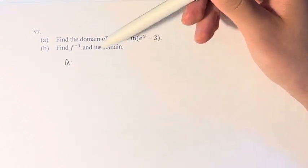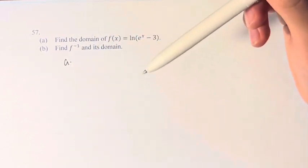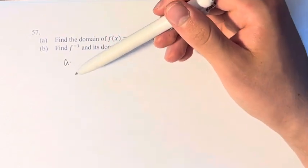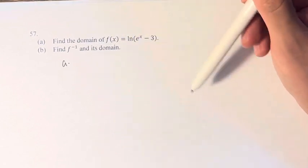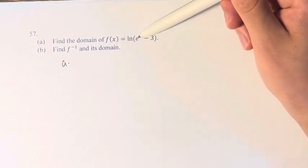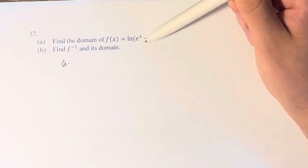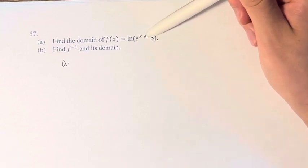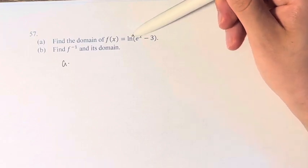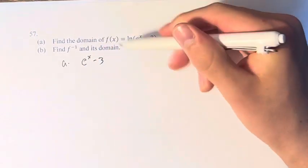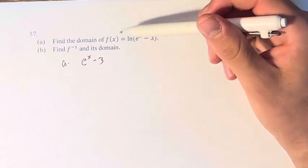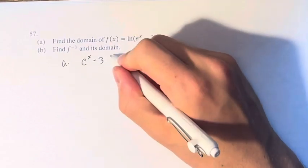So the starting point for the domain of any function is all real numbers, negative infinity to infinity. And then we look at the function and see which values we can exclude from that. So here, e^x can take on any values, we can subtract 3 from any of those values. But the restriction comes when we're taking the natural log of e^x minus 3, because when you're taking the log of anything, the thing inside has to be greater than 0.